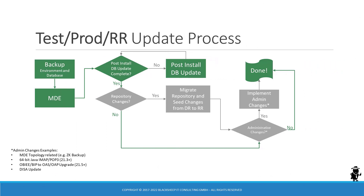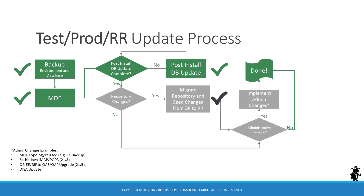The same is true for test or production, also known as RR environments, where the update process is a little shorter. The mandatory steps are the same: back up your environment, run MDE, run post-install database update. If there's nothing else to do, you're done. You have to repeat the update process on every Siebel instance. If the DR update included repository changes, you have to use the migration application to deploy the new and updated artifacts from the development environment to the runtime environment. You might also have administrative changes on your checklist to execute before declaring the update complete.